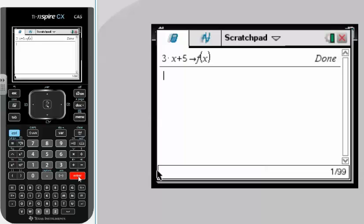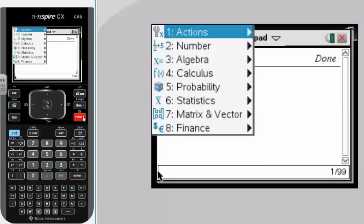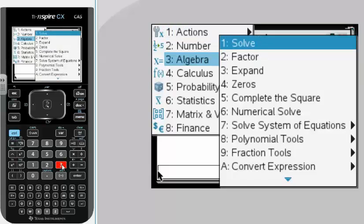The message you should see is done. The second step then is to actually do the computation. So we're going to choose menu, option 3, which is algebra, and solve.